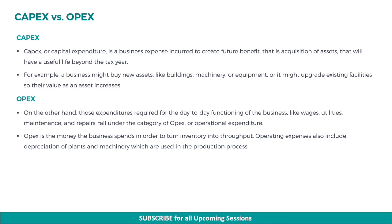CapEx, or capital expenditure, is a business expense incurred to create future benefit, i.e. acquisition of assets that will have a useful life beyond the tax year. For example, a business might buy new assets like buildings, machinery, or equipment, or it might upgrade existing facilities so their value as an asset increases.